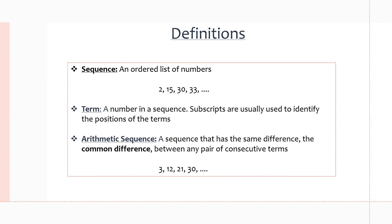Let's go over some definitions we need to know before going into any examples with sequences. First, what is a sequence? A sequence is simply an ordered list of numbers. This could be increasing, decreasing, or both. For example, 2, 15, 30, 33, and so on is a sequence. I'm only showing four here because this could go on forever, but that is a quick example of a sequence.